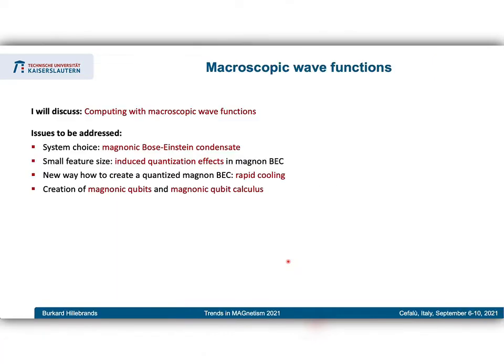What I will discuss is computing with macroscopic wave functions. We have wave functions like those for visible light, so we have interference in the system. To do this kind of computing, we have to find a suitable system, and the system choice is a Magnonic Bose-Einstein condensate. These condensates are especially interesting in small structures or small feature sizes, because then we have induced quantization effects in such Bose-Einstein condensates.